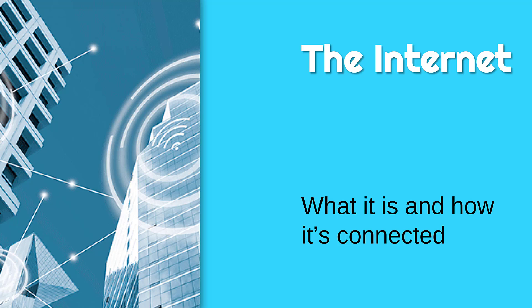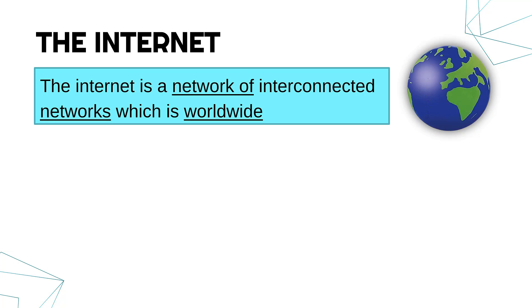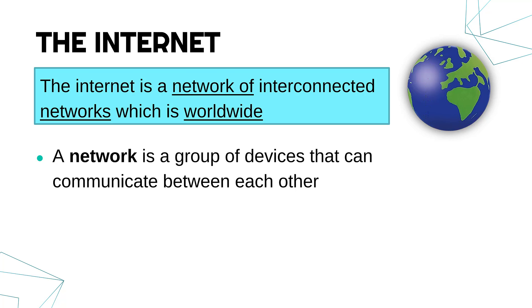Hello, this video is going to be all about the internet — what it is and how it's connected. We're going to go through a few different ways the internet can connect up and some of the characteristics of the networks involved. Really, the internet is just a network of networks — a network of interconnected networks, which crucially is worldwide. A network itself is just a group of devices that can communicate with each other, and the internet is a network which contains lots of other networks.